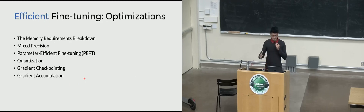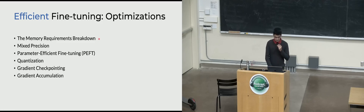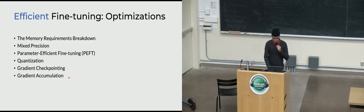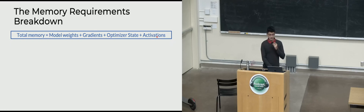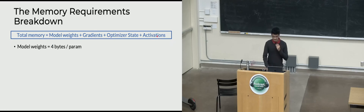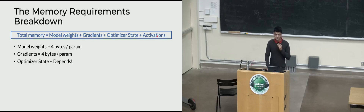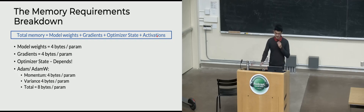For efficient fine-tuning, the focus is prioritizing memory while not doing too badly on throughput. We'll go through a memory requirements breakdown focusing on the transformer. The classic equation for any deep learning training: weights, gradients, optimizer state, and activations. In a typical training setting, weights take four bytes per parameter, gradients four bytes per parameter, and optimizer state — for Adam or AdamW — takes eight bytes per parameter because you maintain two things per element.